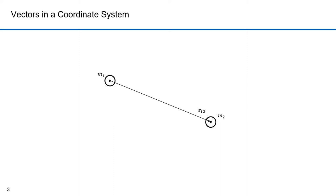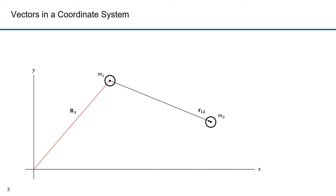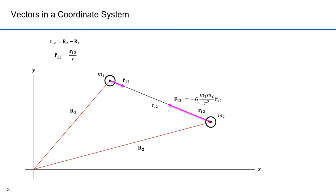I want to set this up in a Cartesian coordinate system with a y-axis and an x-axis. This is the position vector for m1 and this is the position vector for m2. The vector r sub 12 is simply the vector r sub 2 minus the vector r sub 1. I can derive the unit vector r by dividing the vector r by the scalar r. Here's the unit vector r12 and here's the force vector f12. As I showed before, f12 equals minus g m1 m2 over r squared times the unit vector r12. Since the force on m2 is equal and opposite to the force on m1, f12 equals minus f21. The unit vector r12 equals minus the unit vector r21. So f21 would equal minus g m1 m2 over r squared times the unit vector r21.